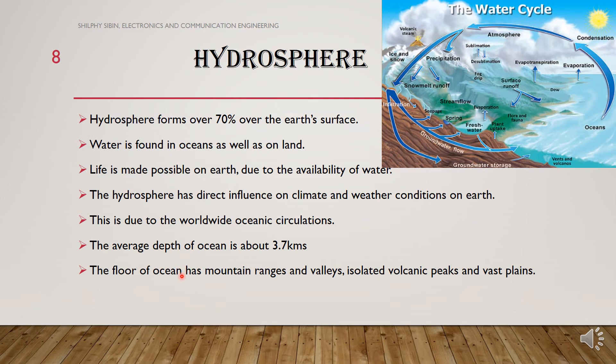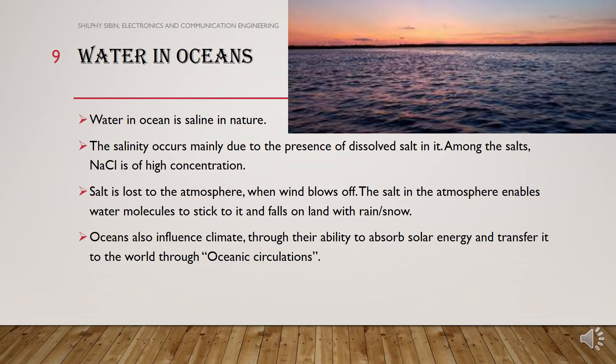The average depth of the ocean is about 3.7 kilometers. The deepest part of the ocean is the Mariana Trench, which is about 11 kilometers deep. The floor of the ocean has mountain ranges, valleys, isolated volcanic peaks, and vast plains.